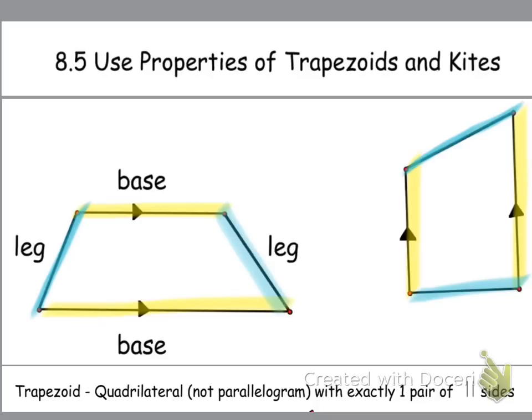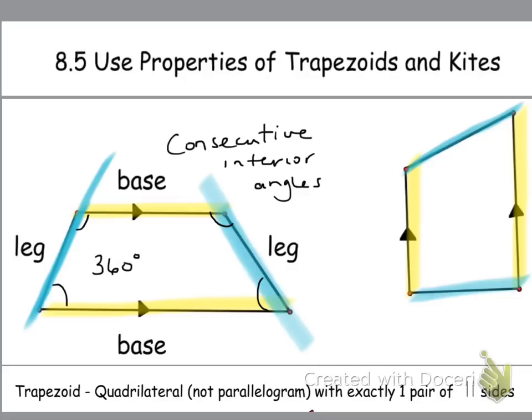But, since you have a set of parallel lines, these legs become transversals. And so with that being said, you now have consecutive interior angles, meaning that those angles will add up to equal 180 degrees. So those are your consecutive interior angles. Which makes sense, because if you look at those four angles, you have two sets of consecutive interior angles. So two sets of angles that equal 180 degrees. So two times 180, you're still going to get your 360 degrees, which we learned earlier in the chapter, every quadrilateral has 360 degrees.